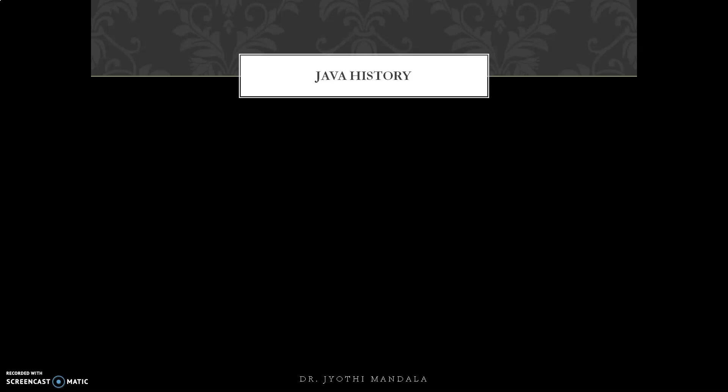Developers wanted a programming language where a program could be executed on multiple devices. To solve that problem, a team was assigned and started working. Their project was called the Java development project. Sun Microsystems developed this Java project in 1991.